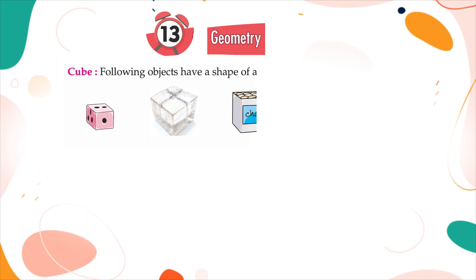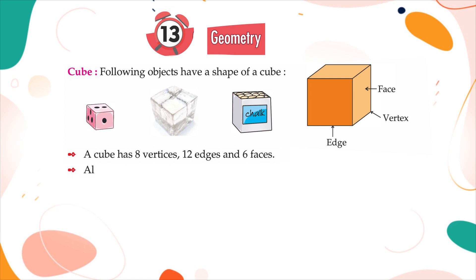Cube: Following objects have a shape of a cube. A cube has eight vertices, twelve edges and six faces. All the faces of a cube are square shaped.